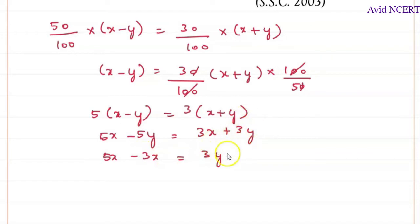Whatever is on this side, keep as it is and take the other one to this side, which is minus 5y goes this side becomes plus 5y. So which is 5x minus 3x is 2x equals 8y.